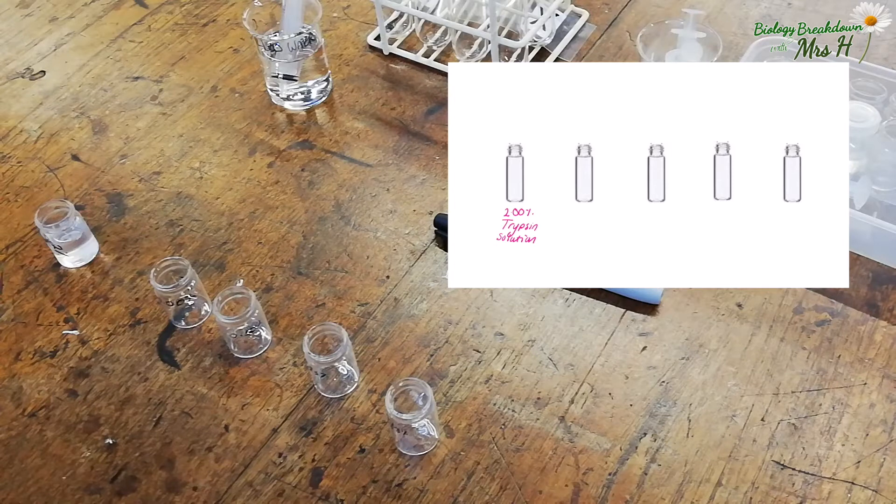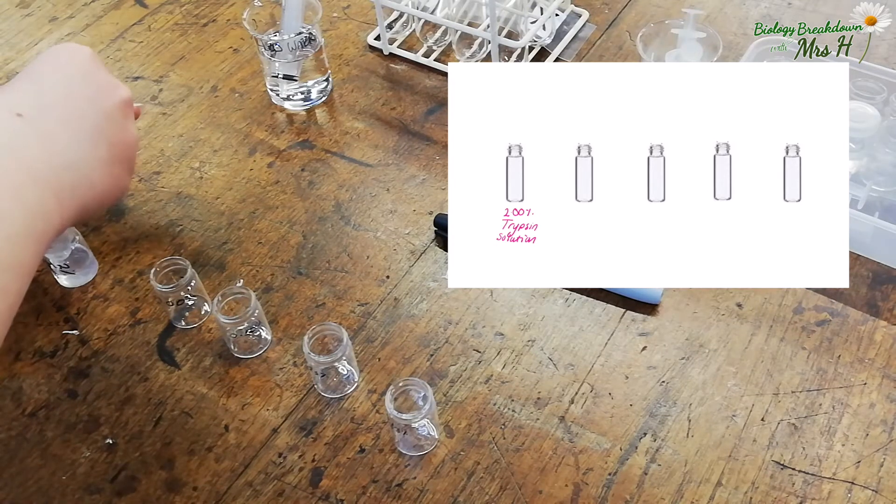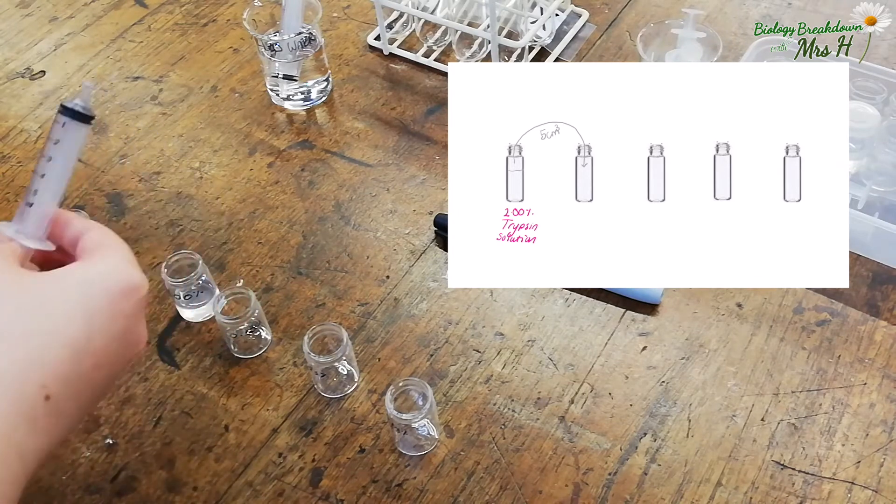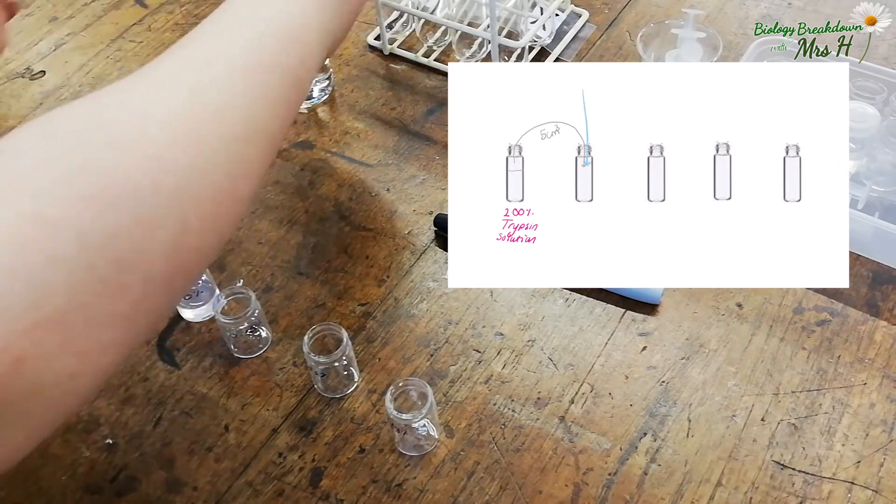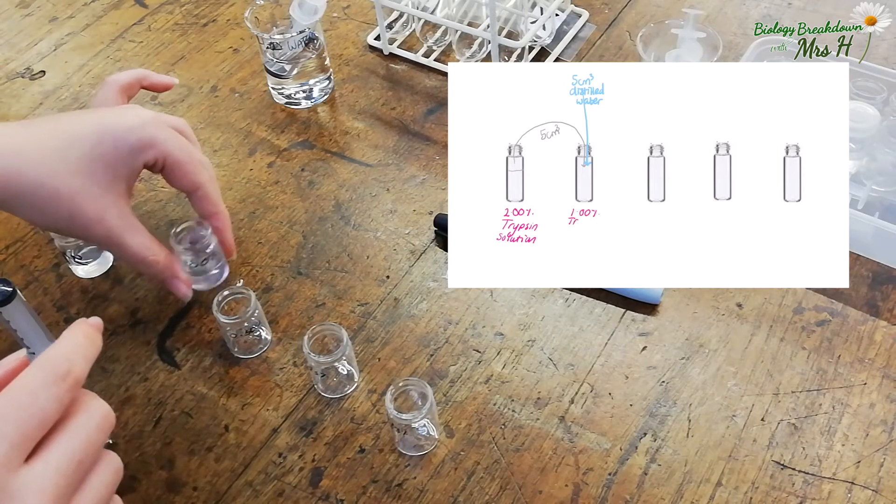We're going to dilute the enzyme solution by half each time. To keep the numbers simple and the volume simple we've been provided with 10 cm³ of 2% trypsin solution. We need to extract 5 cm³ from this and put that into an empty tube then add 5 cm³ of distilled water so this tube will now contain 1% trypsin solution.